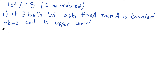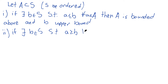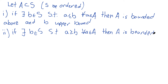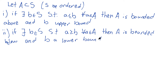And we should see a very similar thing for a lower bound and being bounded below. If there exists some B in S such that a is greater than or equal to B for any little a in A, then A is bounded below. It can't exceed in the opposite direction — it's bounded below. And we'll call B a lower bound. Exactly what you would expect.